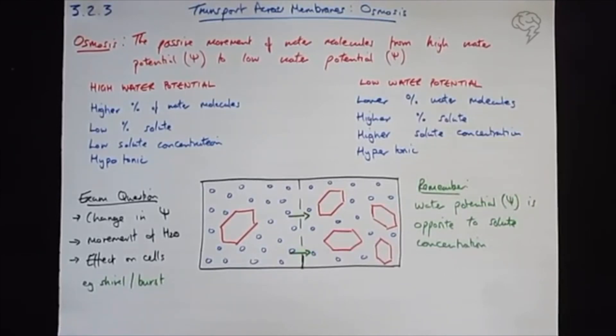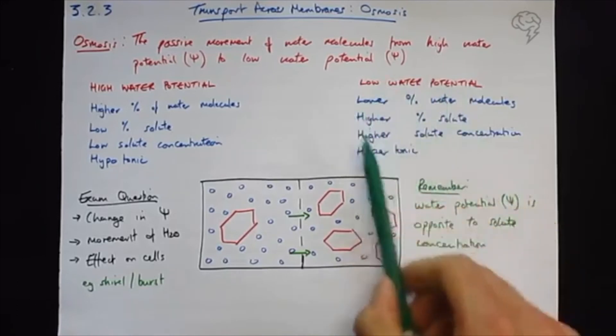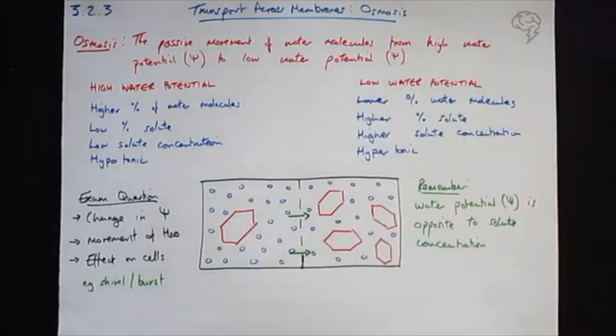Remember, animal cells don't have a cell wall. So if you dissolved lots of solute inside an animal cell, it would make the water potential very low or more negative, and that would mean lots of water would rush into the cells by osmosis. And without a cell wall they can't resist that, and it's called osmotic lysis. So osmotic lysis is when a cell explodes or bursts because the water has rushed in because the water potential inside it was too low.